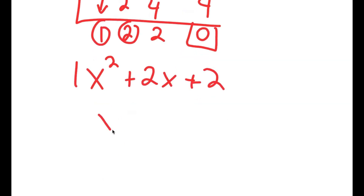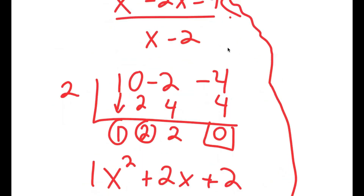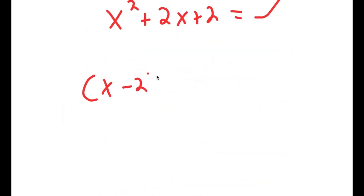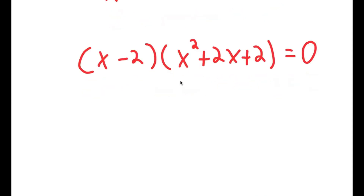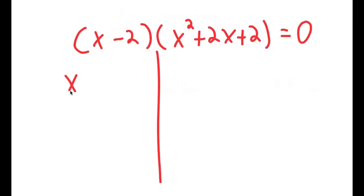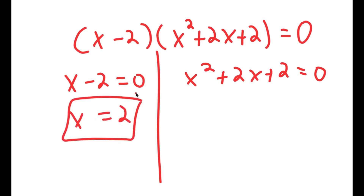So I get x squared plus 2x plus 2, and this means that x minus 2 times x squared plus 2x plus 2 is equal to 0. For x minus 2 equals 0, x is obviously equal to 2 — and we already got this solution before, so this is no surprise.